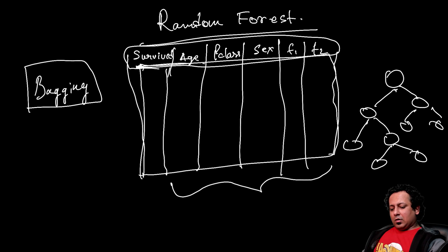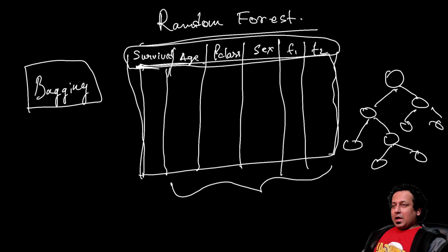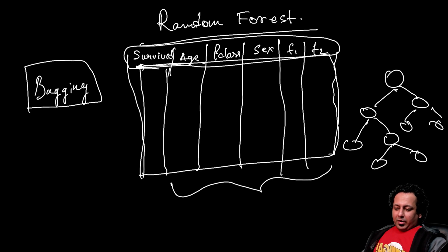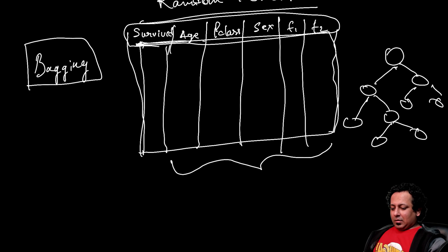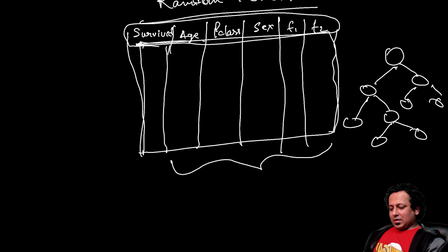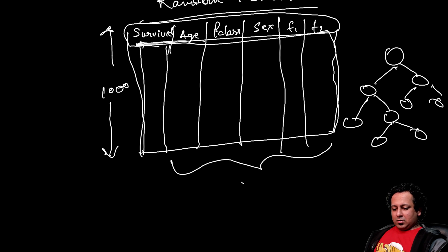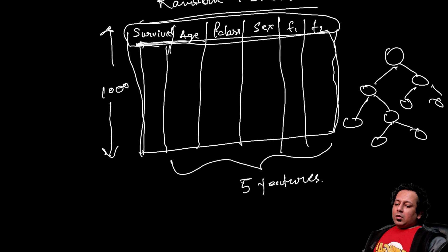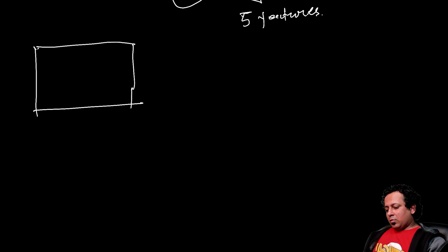If you're familiar with Kaggle, you'll know that people train a bunch of different models on the dataset or subsets of features and combine them to achieve better accuracy — that's what bagging is doing. Let's say our dataset has 1000 samples and five features.